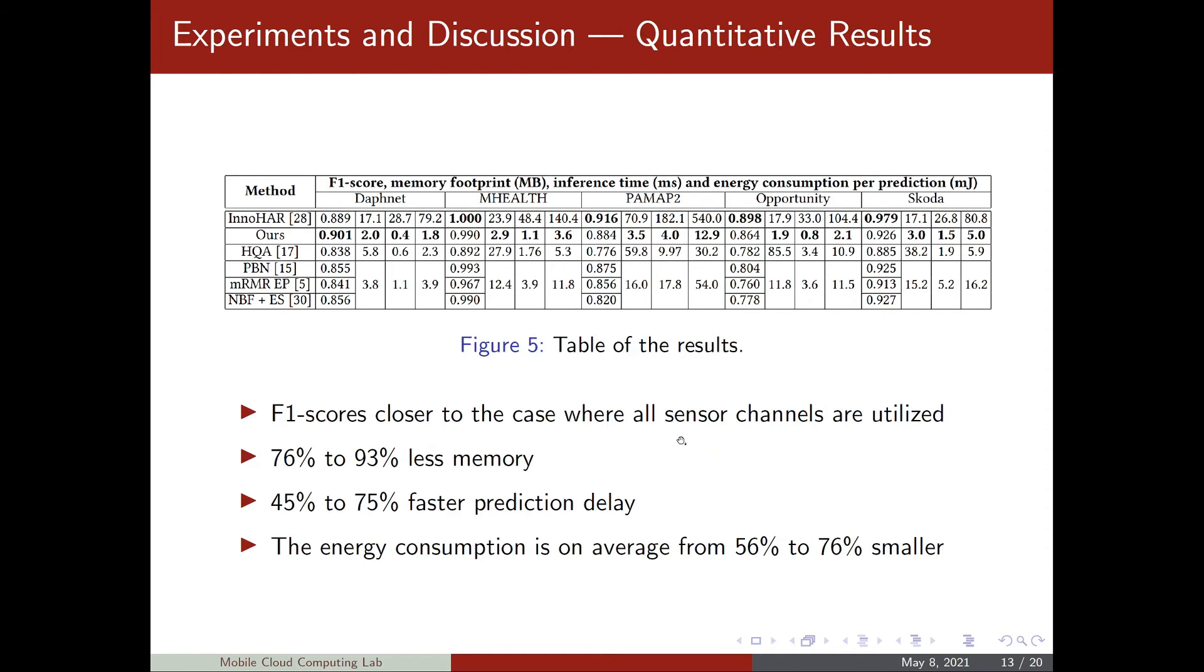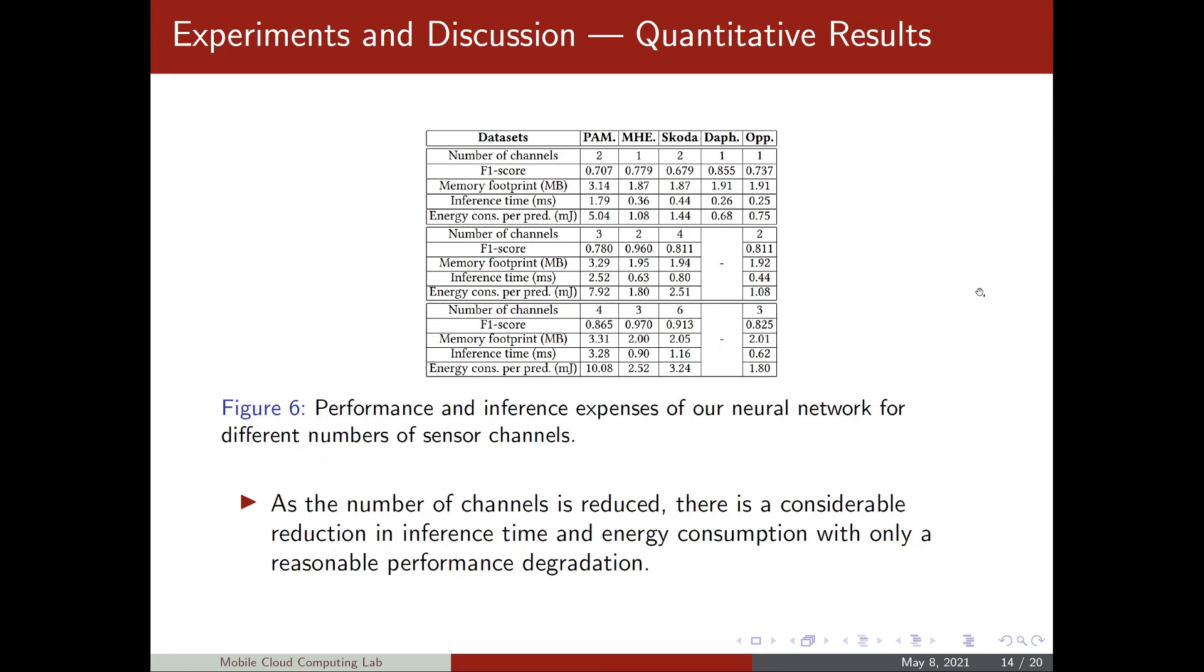We move on to the quantitative results. As we can see in the table, our method is able to deliver F1 scores close to the case where all sensor channels are utilized. We use from 76% to 93% less memory than our baselines, 45% to 75% faster prediction and energy consumption is on average 56% to 76% smaller than the baselines.